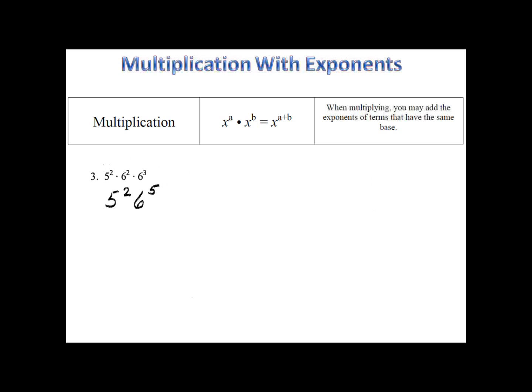The third example is a little strange, and you probably would never write it out like this, but I wanted to show you the nice properties of exponents. 5 to the second times 6 to the second times 6 to the third. We can't combine the fives and the sixes, but we can combine the sixes. 6 to the second times 6 to the third is 6 to the fifth.